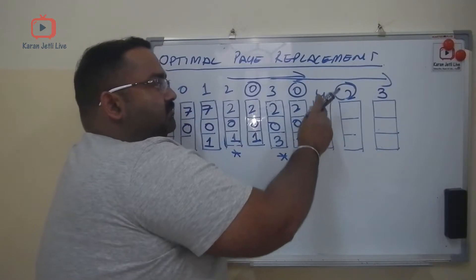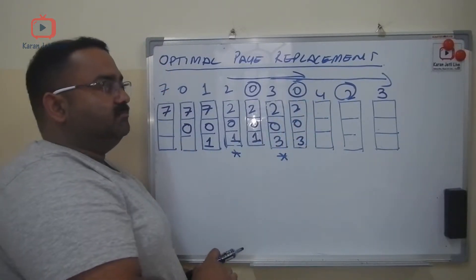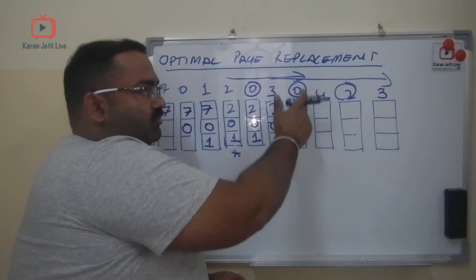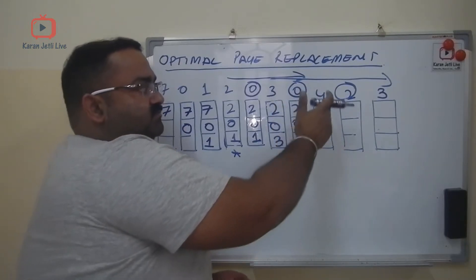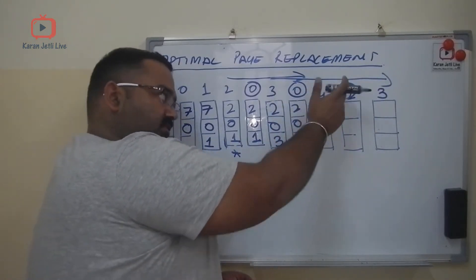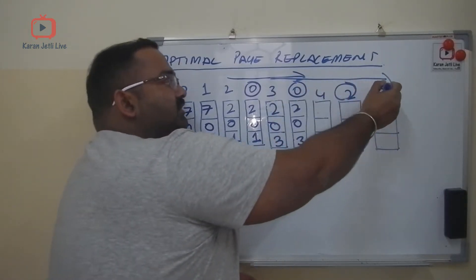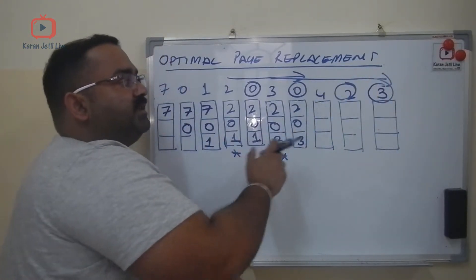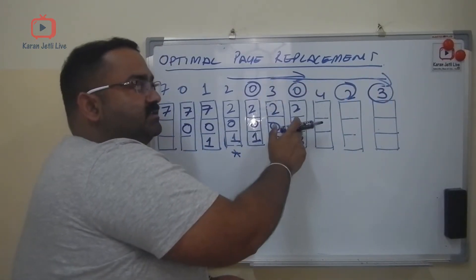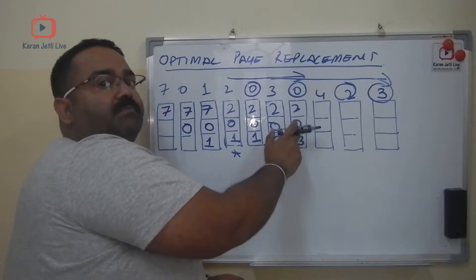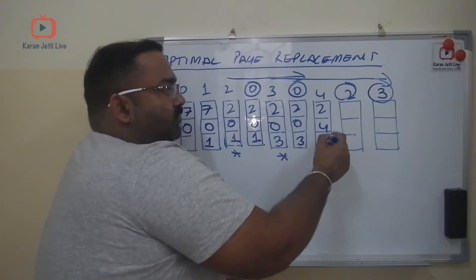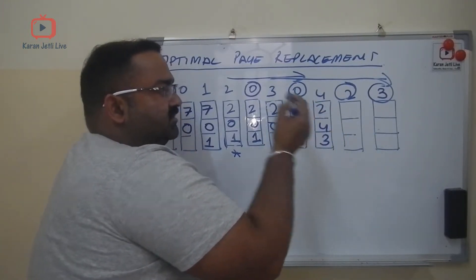Then comes 4. Again, look for the pages we need in the future — we need 2, and we need 3 also. So which page do we not need? That is zero. So 4 replaces zero, and the cache becomes: 2, 4, 3.